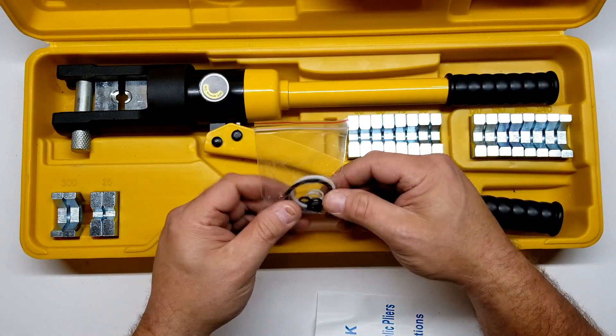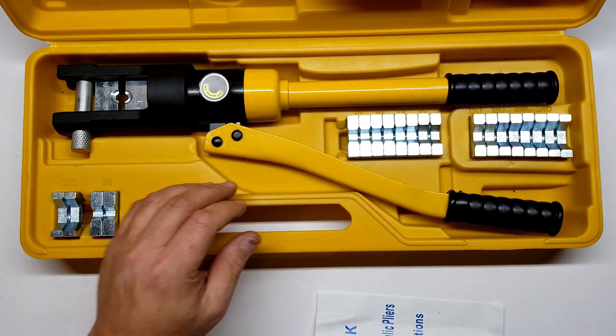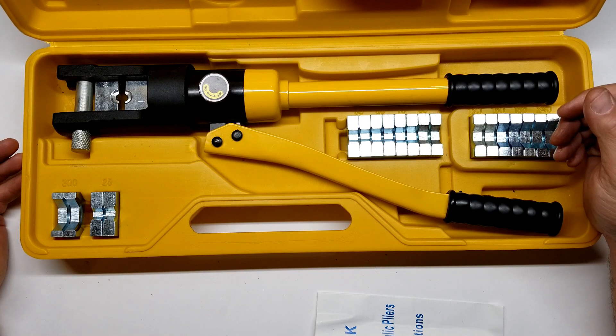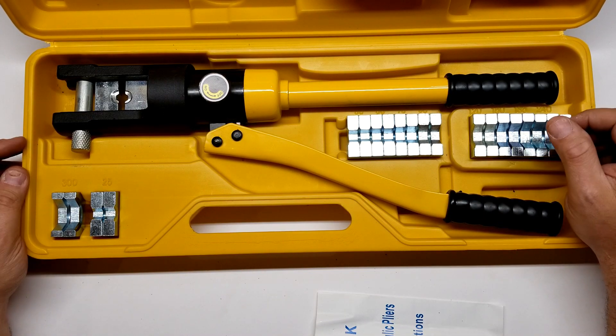Anyway, enough about that. This is the tool itself and I'm going to demonstrate crimping some 4 odd cable with some tinned copper eyelets.